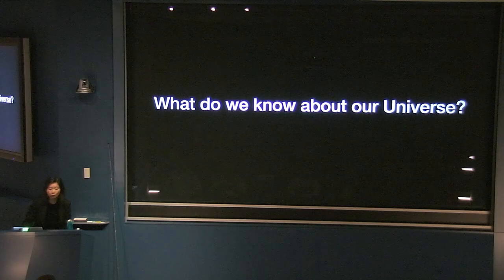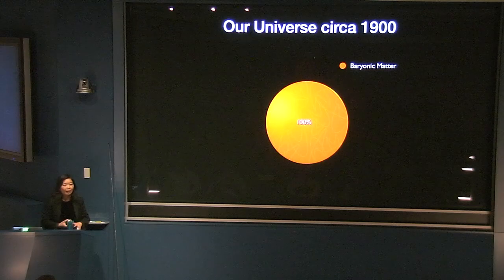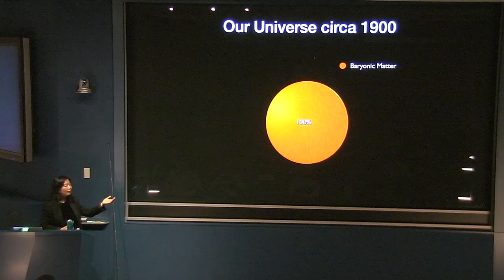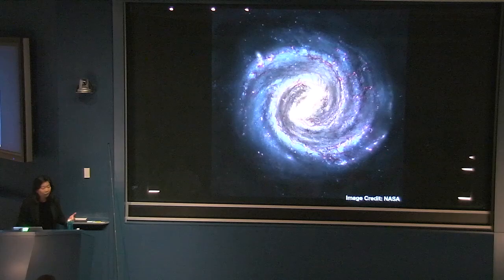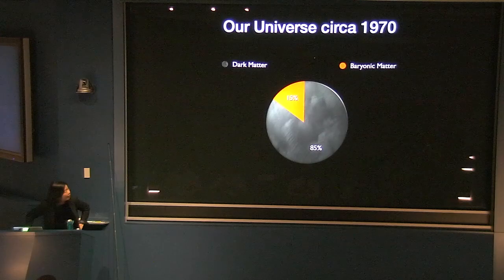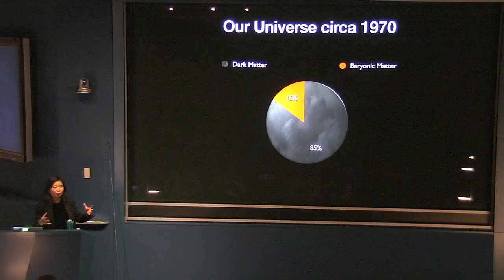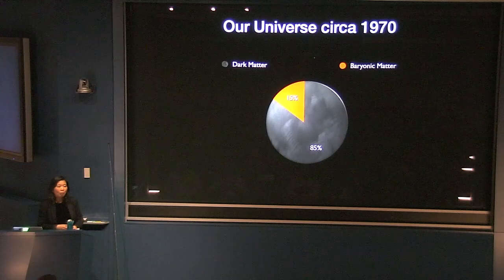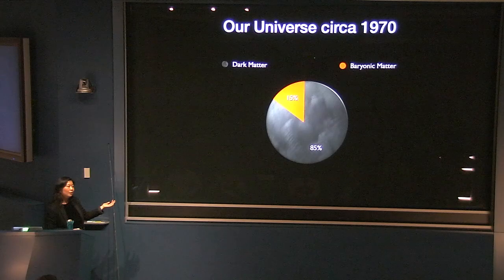What do we know about this universe? Our universe circa 1900 was thought to be 100% baryonic matter — normal, everyday stuff made up of neutrons and protons. By the 1970s, we realized that only 15% of the universe is baryonic matter — normal, everyday stuff. You, me, the stuff that makes up the table. There's 85% of something mysterious called dark matter.